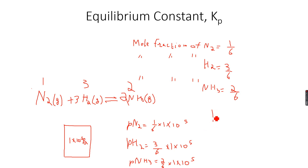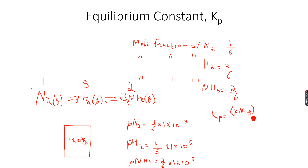Kp, the equilibrium constant in terms of partial pressures, is the partial pressure of the products raised to the power of their stoichiometric coefficients divided by those of the reactants. So it will be P(NH3) raised to the power of 2 (stoichiometric coefficient of NH3 is 2), divided by P(H2) raised to the power of 3 (stoichiometric coefficient of H2 is 3) and P(N2) raised to the power of 1.